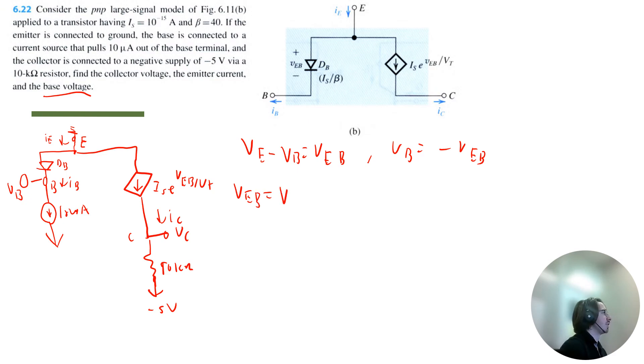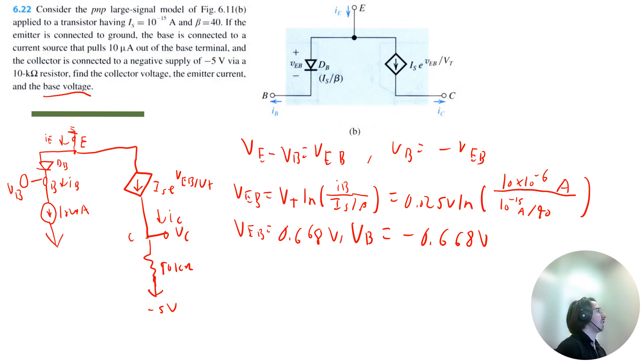So you can calculate that by doing the thermal voltage multiplied by the natural log. The voltage at the base current divided by this saturation current divided by beta. So that's the thermal voltage is 0.025 volts times the natural log of the base current, which is this 10 microamps, which I'm going to convert to just amps. We're dividing that by the saturation current, which is also getting divided by beta. So I give VEB is equal to 0.668 volts. So therefore, the base voltage is just the negative value of that. So VB is negative 0.668 volts.